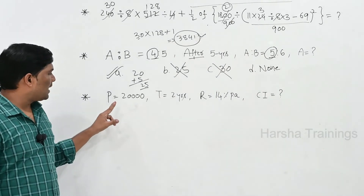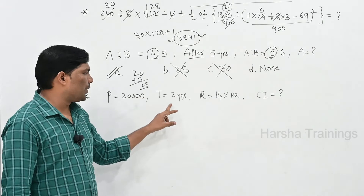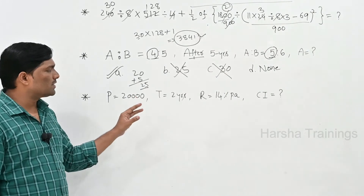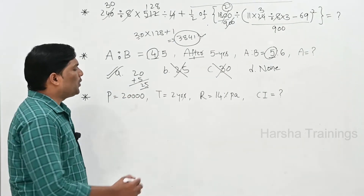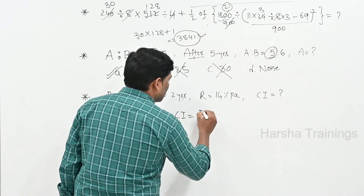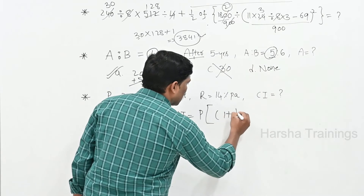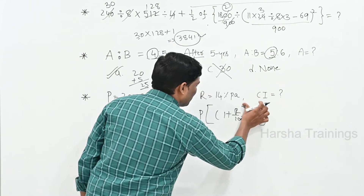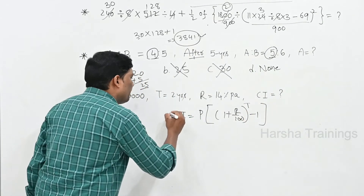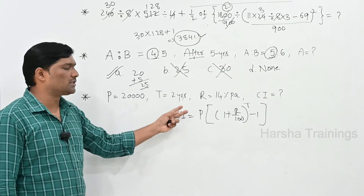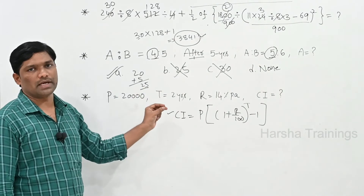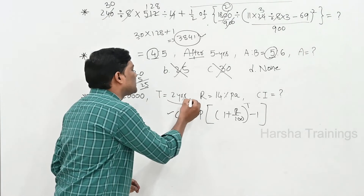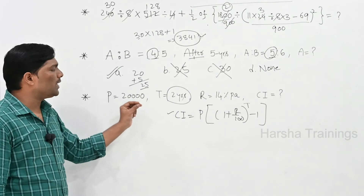Next problem: Principal amount is 20,000 rupees, time is 2 years, rate of interest is 14% per annum. Find the Compound Interest. The CI formula is: CI = P × (1 + R/100)^T − 1. Substituting directly takes two to three minutes, so we use the shortcut method.